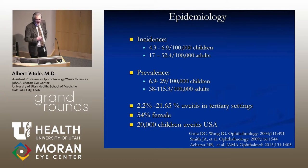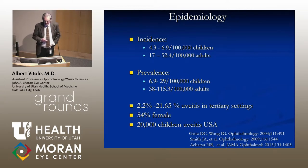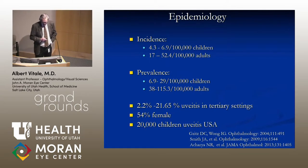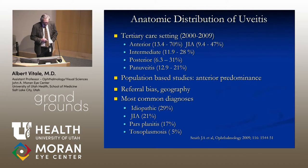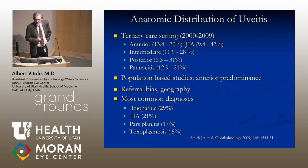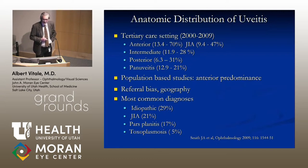Pediatric uveitis is about four-fold less common than in adults, but it can represent up to a third of patients seen in a tertiary care setting, representing about 20,000 children with uveitis in the United States. There have been some definitive shifts in the anatomic distribution of uveitis in the past decade, with an increase in the number of pan-uveitis and intermediate uveitis.